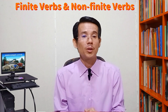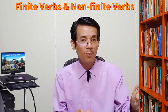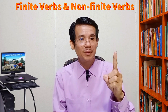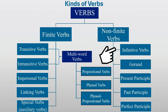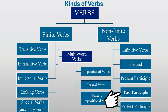Non-finite verb also consists of five kinds of verb form. One, non-finite verb can be infinitive verb. Two, it can be gerund. Three, it can be participle — and participle consists of three different kinds: one, present participle; two, past participle; and three, perfect participle.